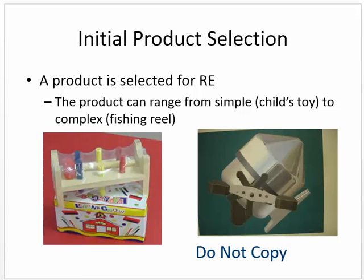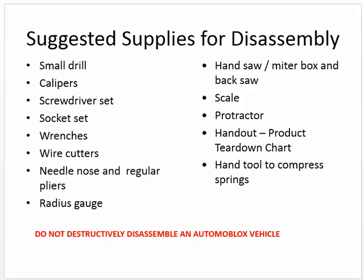Initial product selection: a product is selected to reverse engineer. It can be something as simple as a children's toy, or it could be something as complicated as a fishing reel. For supplies, anything that's required to take the product apart may be used. We do not destructively disassemble our Automoblox vehicle — we are not going to disassemble it any more than what we have already done prior to this in class.